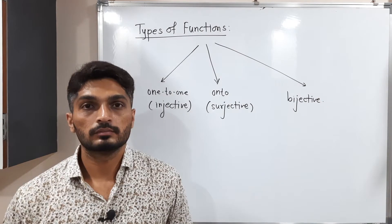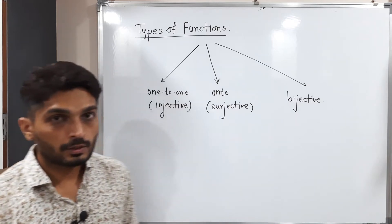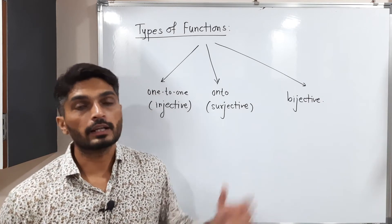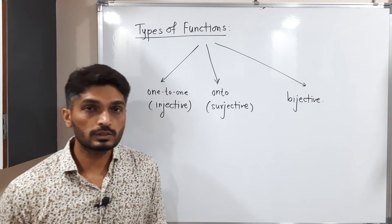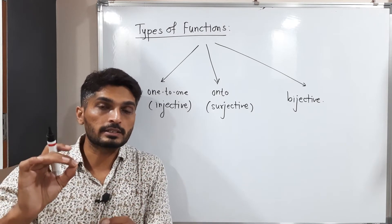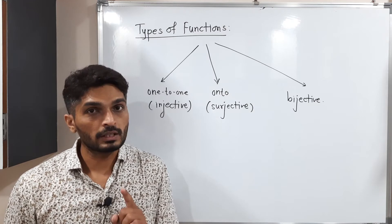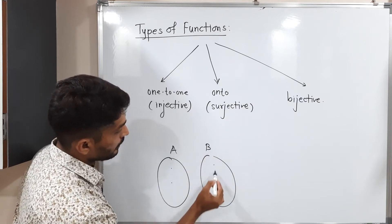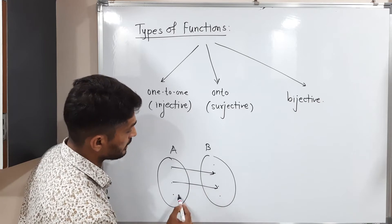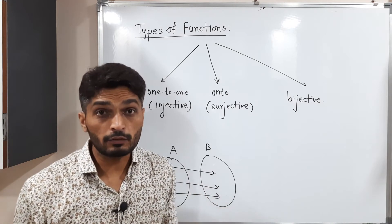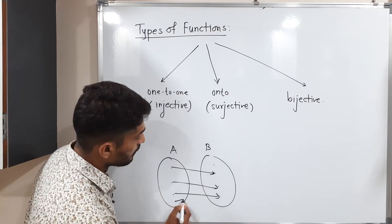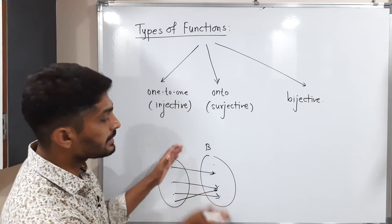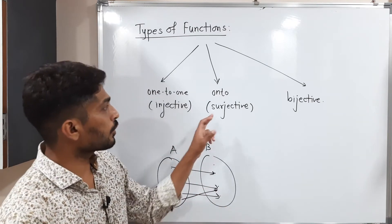Let us talk about types of functions. We will discuss three types: one-one (injective), onto (surjective), and bijective. A function is injective if any two distinct elements have distinct images. If there are any two elements going towards a single point, it is not injective. Every element should have a distinct image for the function to be injective.